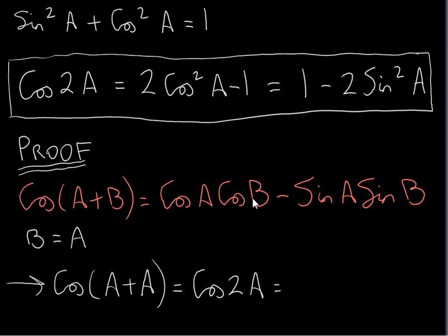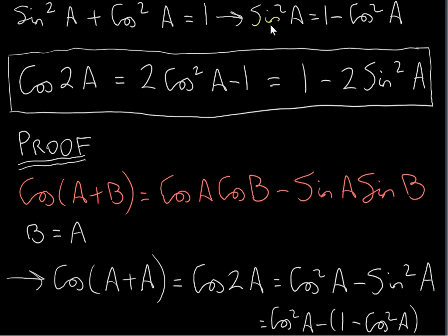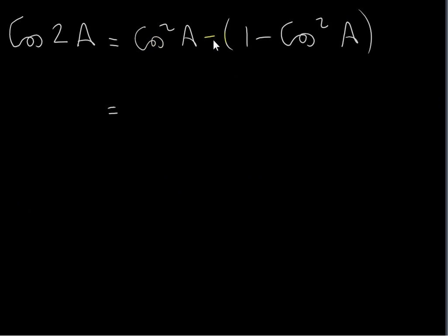We substitute A in for B on the right-hand side. So we get cos A times cos A — well, that's cos²A. And substituting A in for sin B, we get sin A times sin A — that's sin²A. Next, we use the Pythagorean identity to replace sin²A with 1 − cos²A. We plug that in, giving cos²A − (1 − cos²A), which becomes cos²A + cos²A − 1, that's 2cos²A − 1.